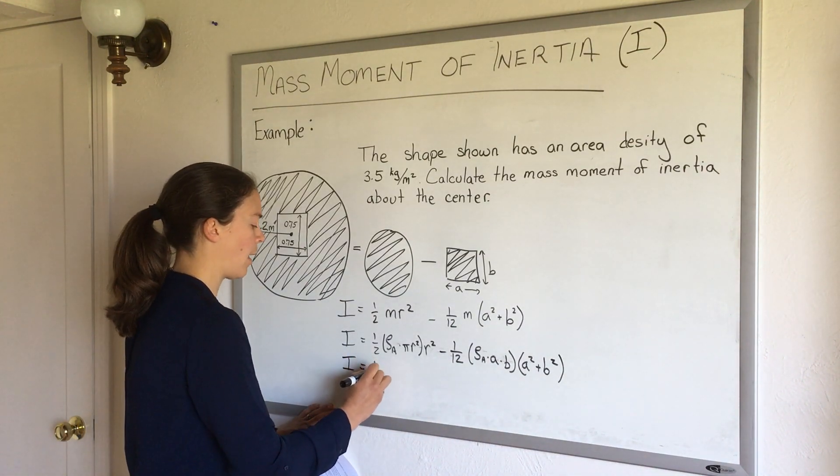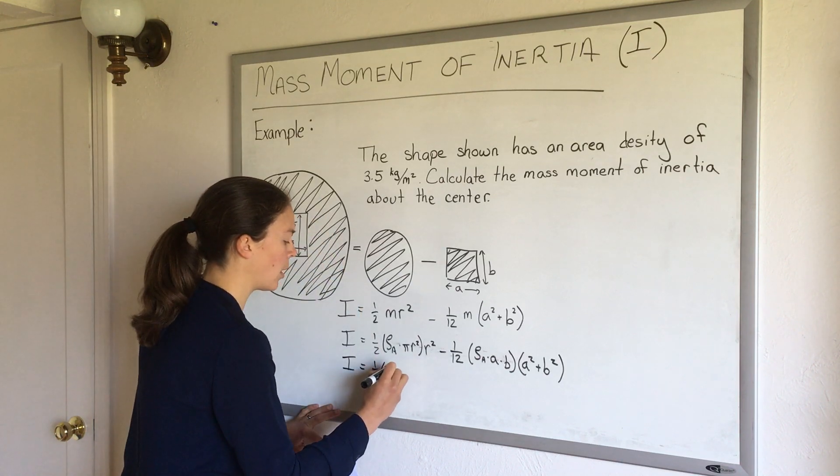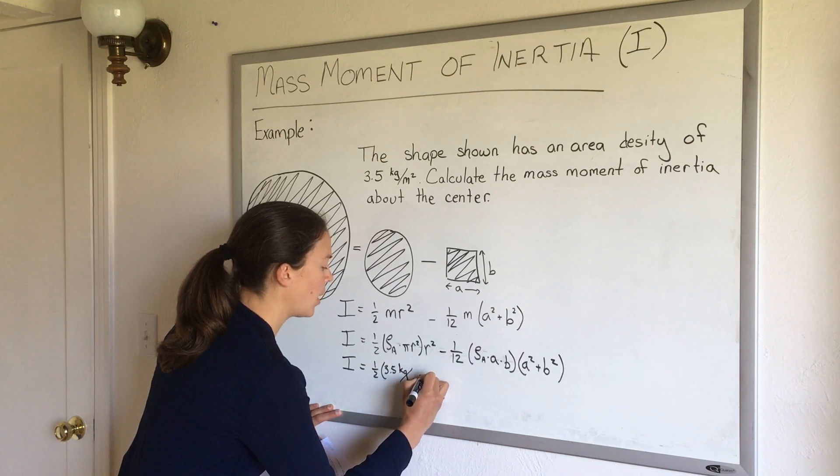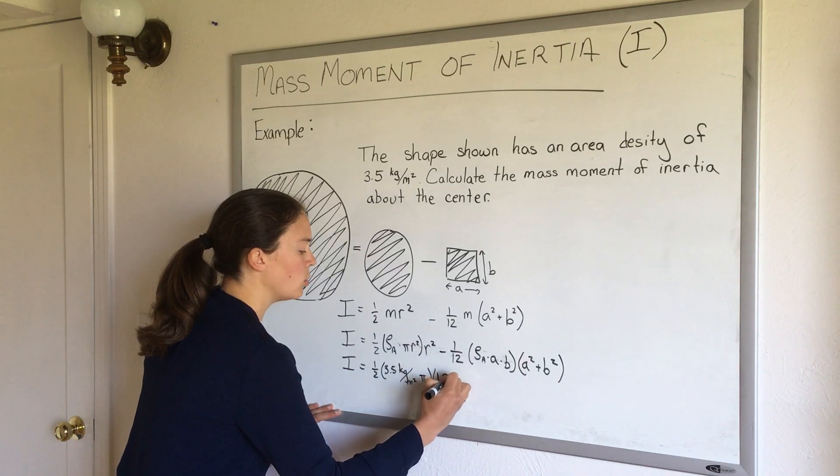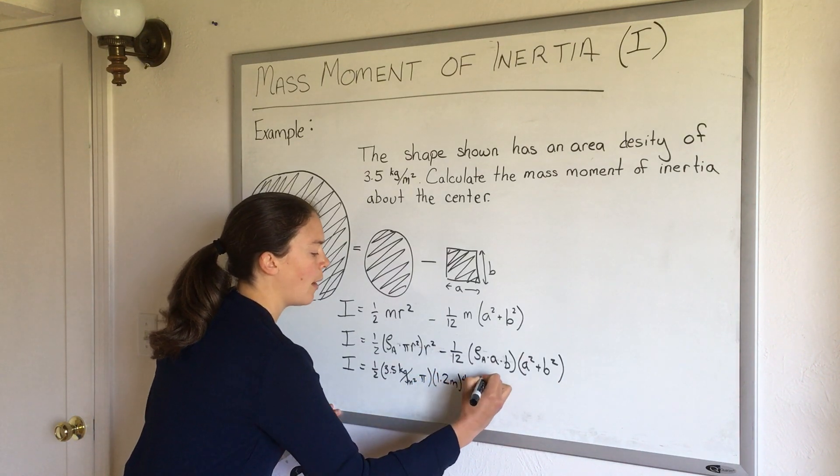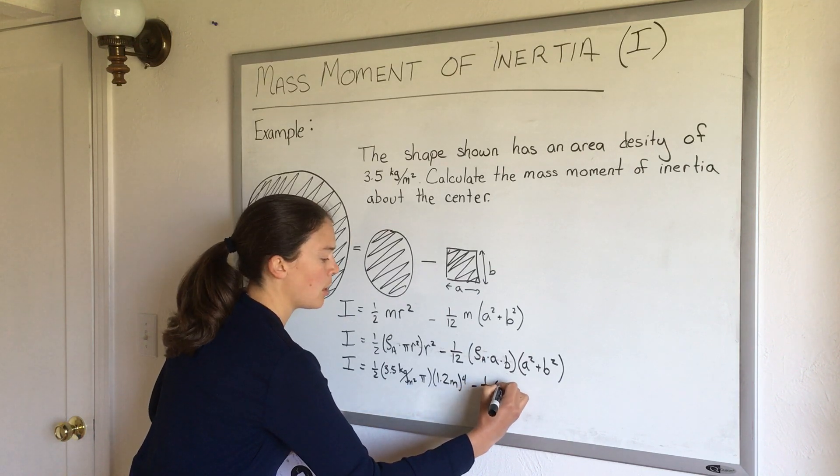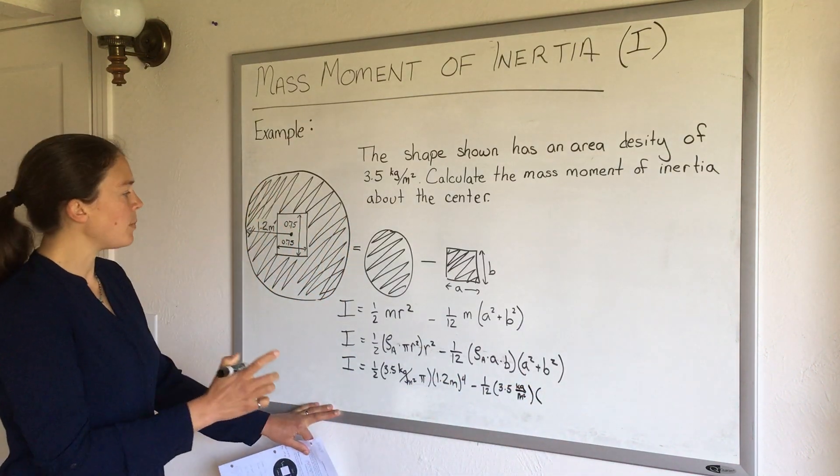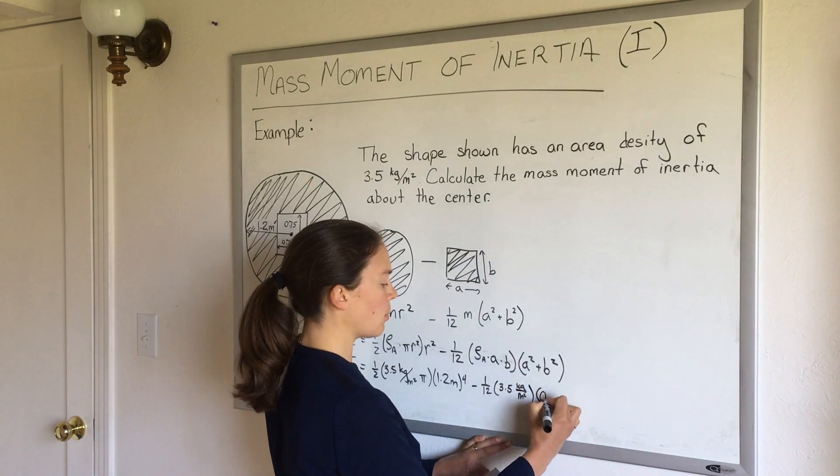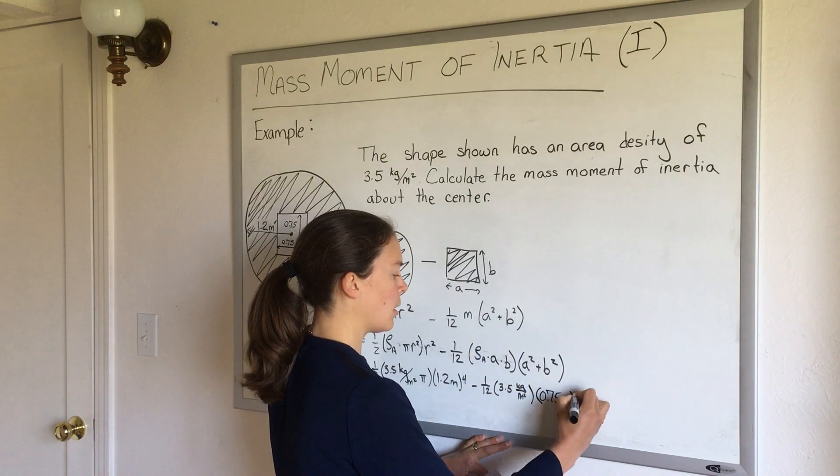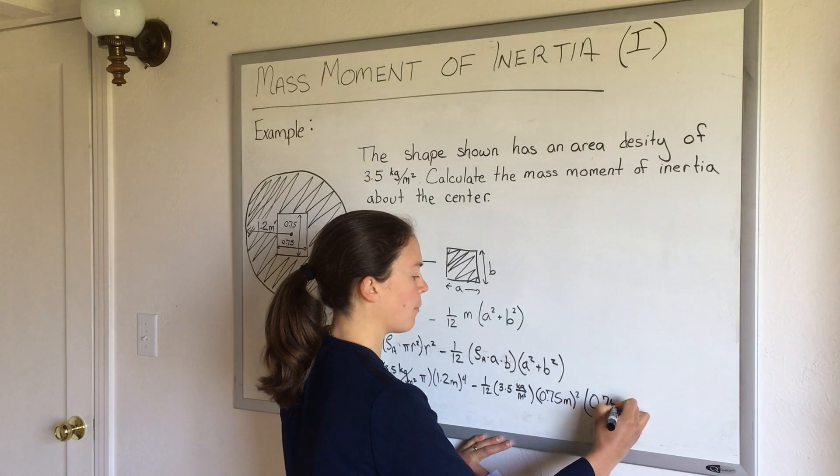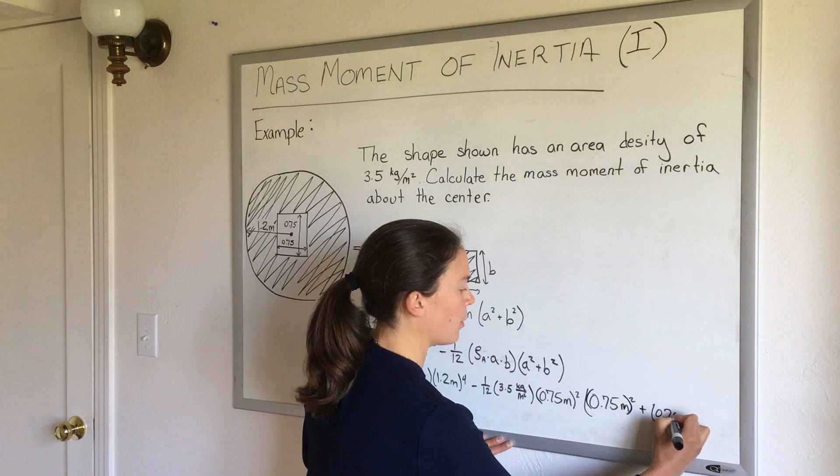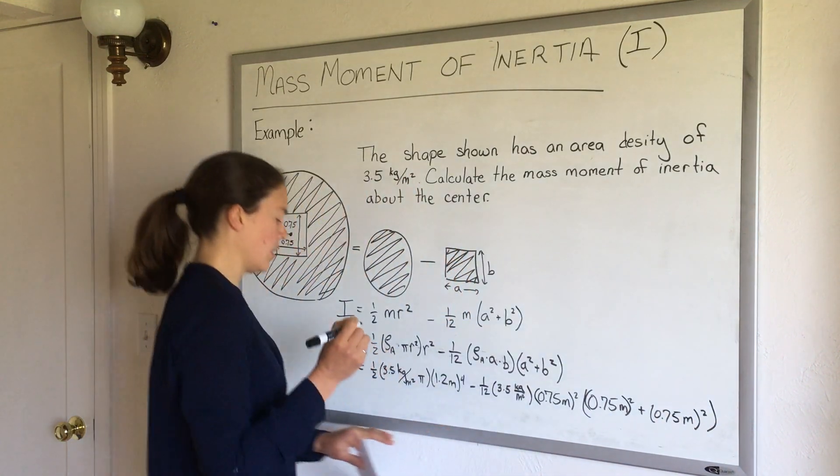So the mass moment of inertia will be one half. The area density was 3.5 kilograms per meter squared. Pi, I have r to the fourth now, my radius is 1.2 meters to the fourth. And then minus 1/12, 3.5 kilograms per meter squared for my area density. A and b are both 0.75 here, so 0.75 meters squared and then 0.75 meters squared plus 0.75 meters squared for A and B.